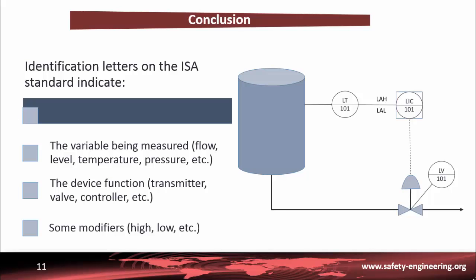Identification letters in the ISA standard indicate first the variable being measured — for example flow, level, temperature, pressure, etc. — then the device functions like transmitter, valve, controller, or some modifiers such as high, low, etc.